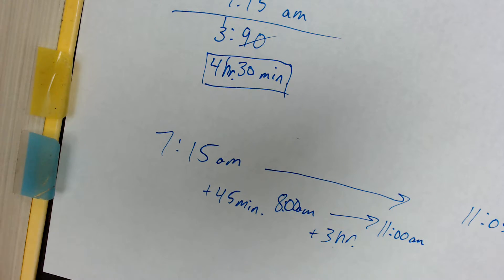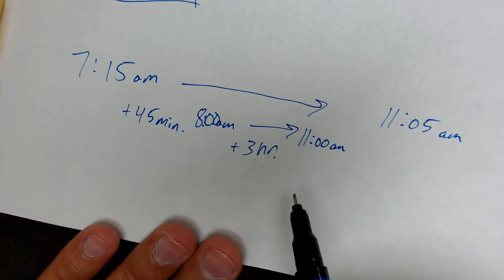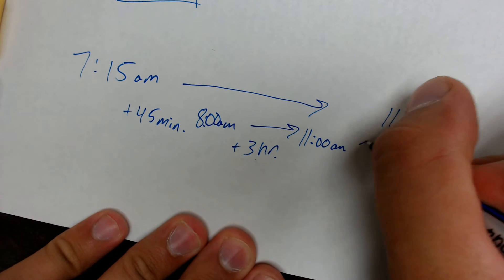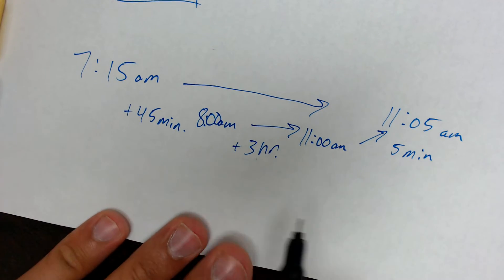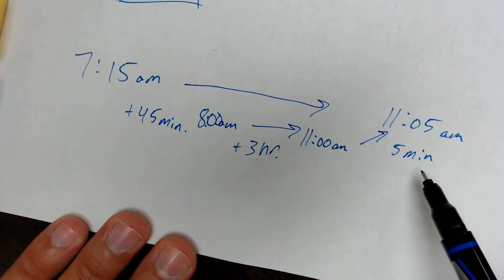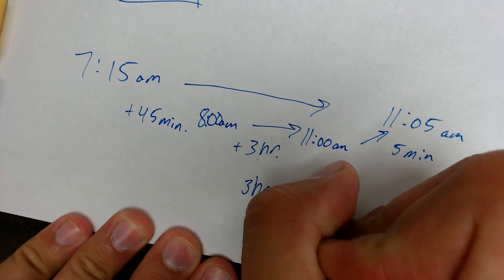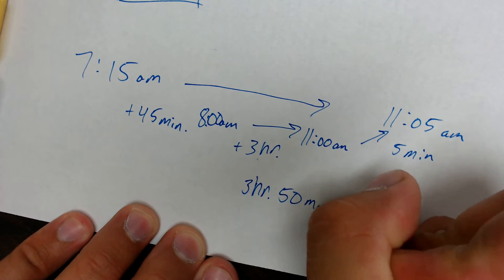So plus three hours, and I'm at 11 a.m. And then from there, from 11 to get to 11:05 a.m., I just have to add another five minutes. So then what I would do is I would add all of these up together. So I've got 45 minutes plus five minutes gives me 50 minutes, three hours and 50 minutes. Whoa. That's not the same thing we got earlier. That means I made a mistake somewhere. Let's find out what this mistake was.